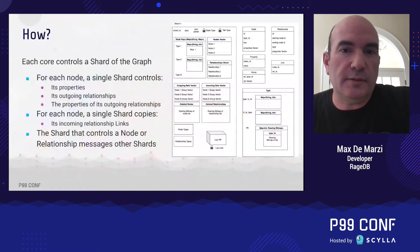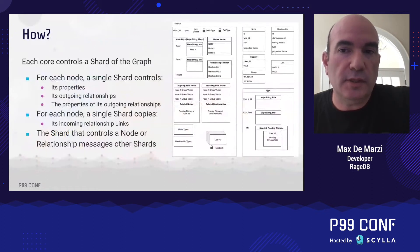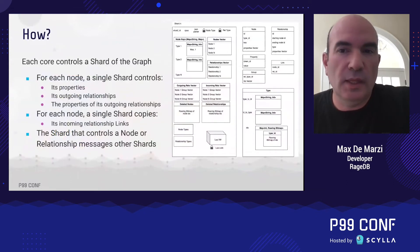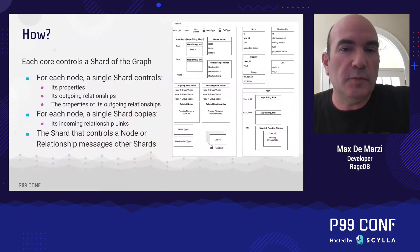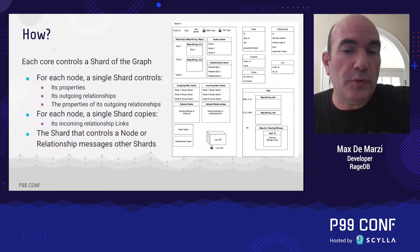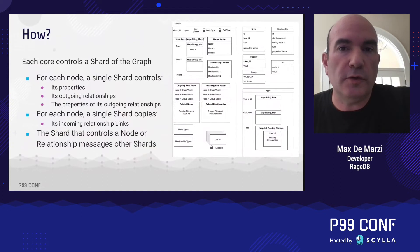A single shard is going to control a node and its properties, as well as that node's outgoing relationships and the properties of those outgoing relationships. A shard is also going to keep a list of all the incoming relationship links that it doesn't control — the relationship IDs coming in from other nodes, but not the properties. These are controlled by the other shards. We need to keep both incoming and outgoing links to support two-way traversals.